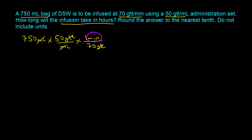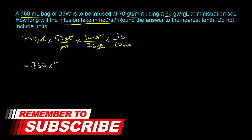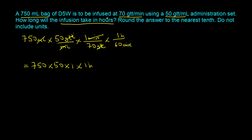We could stop here if the question asked for time in minutes, but since it asks for hours, we need one additional step. We use the conversion factor that 60 minutes make an hour, so the minutes cancel out and we're left with hours. Taking all terms in the numerator — 750 times 50 times 1 hour — and dividing by the denominator — 70 times 60 — gives us 8.93 hours. Rounded to the nearest tenth, the answer is 8.9.